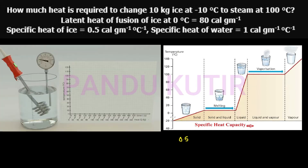At zero degrees centigrade, the line becomes horizontal. This horizontal line then rises again in the middle — representing the phase change at the melting point.